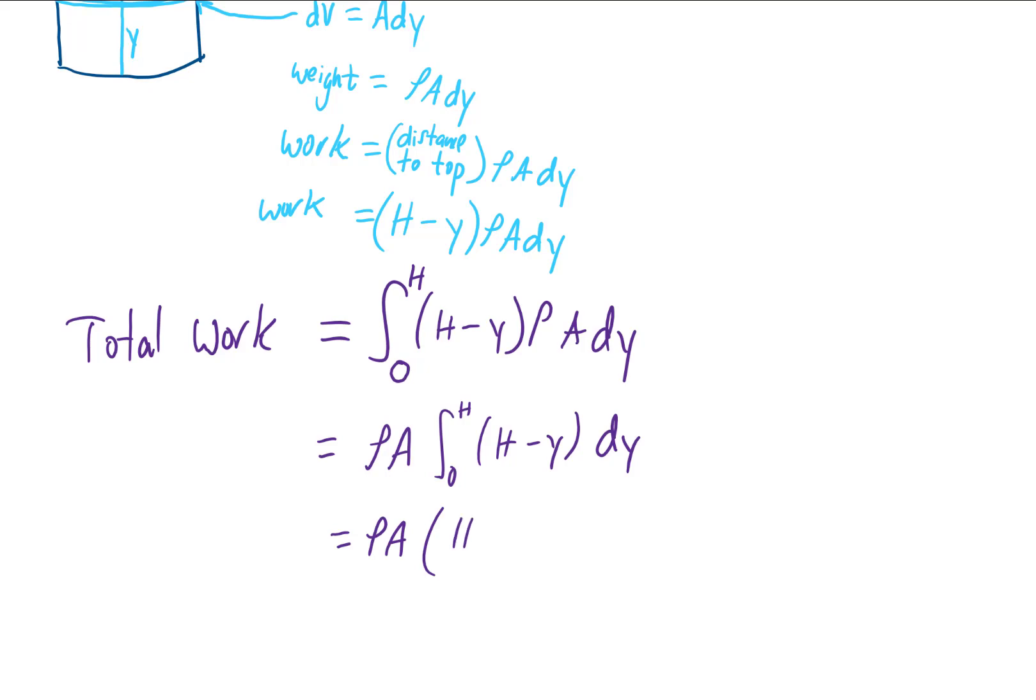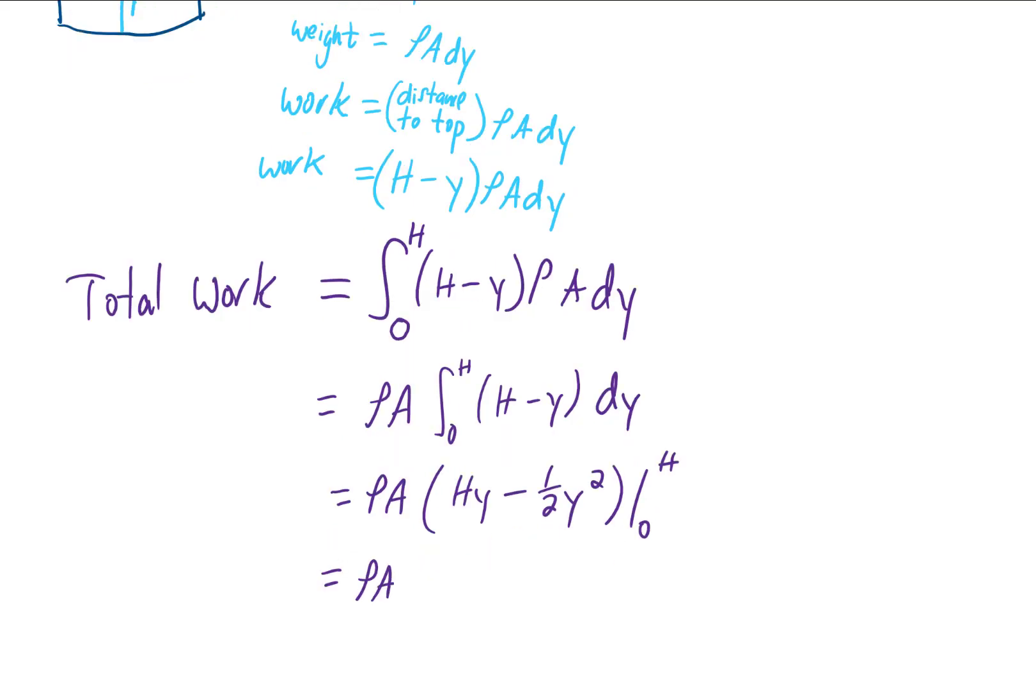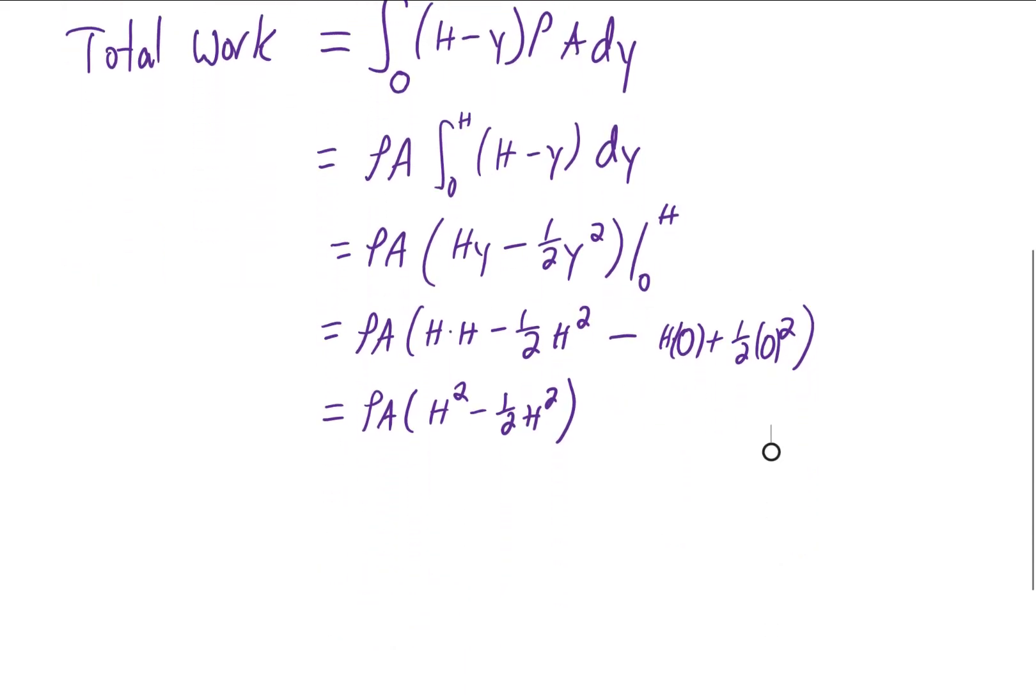The integral of h with respect to y is just h times y. The integral of y with respect to y is one half y squared. We're going to evaluate that from 0 to h. Notice that plugging in 0 gives us 0 for both terms. So we end up with in the parentheses h squared minus one half h squared. That is just going to be one half h squared times rho times the cross sectional area A.